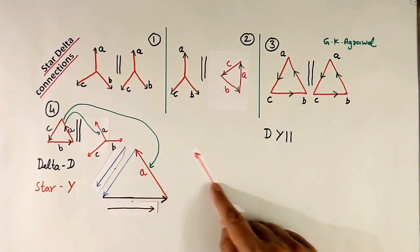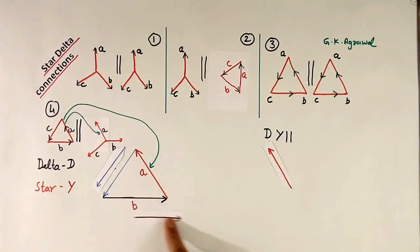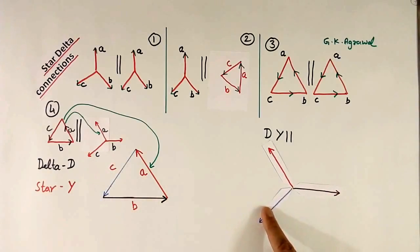Now what we do? We will shift here. See I am keeping direction same. This B phase we will bring here. And C phase we will bring here. This is A. This is B. This is C. This shape exactly like this.